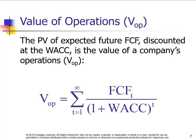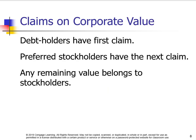The value of operations is the present value of all the future free cash flows discounted at the cost of financing — the weighted average cost of capital. Who has claims to the value of the company? Debt holders have the first claim, followed by preferred stockholders, and then any remaining value belongs to stockholders. From previous videos, we sometimes refer to stockholders as residual owners — they only get something if there's something left over.